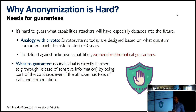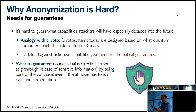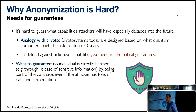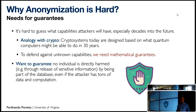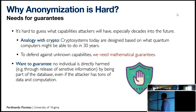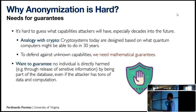These examples call for the need for guarantees. Anonymization is hard because it's hard to guess what an attacker might have in the future — whether new information might be revealed or new, more powerful computational models might be available. There is an analogy with cryptography: cryptosystems today are built focusing on what quantum computers might be able to achieve in the future. We need to guarantee that no individual is directly harmed by being part of a dataset, even if the attacker has access to any possible information on any Turing machine.